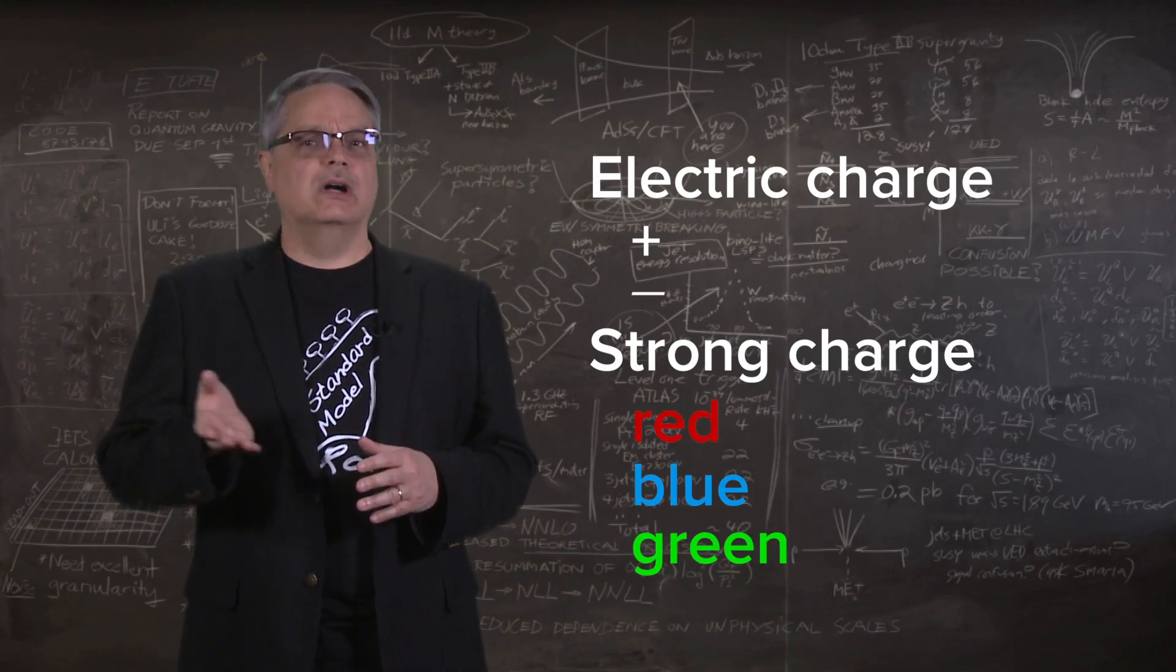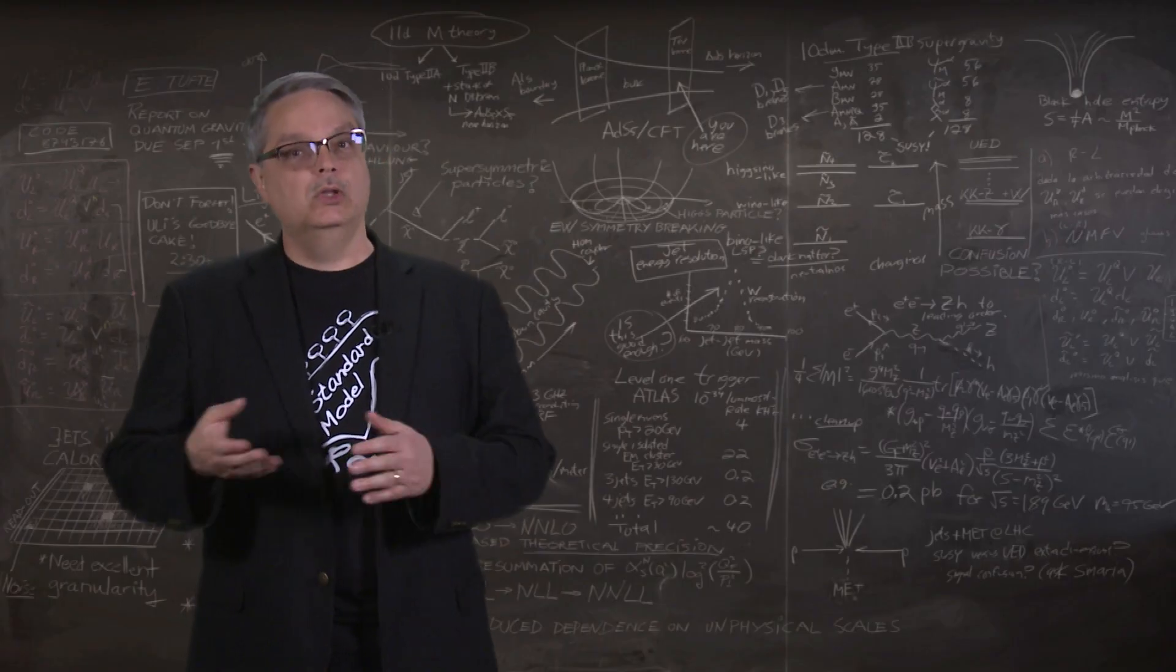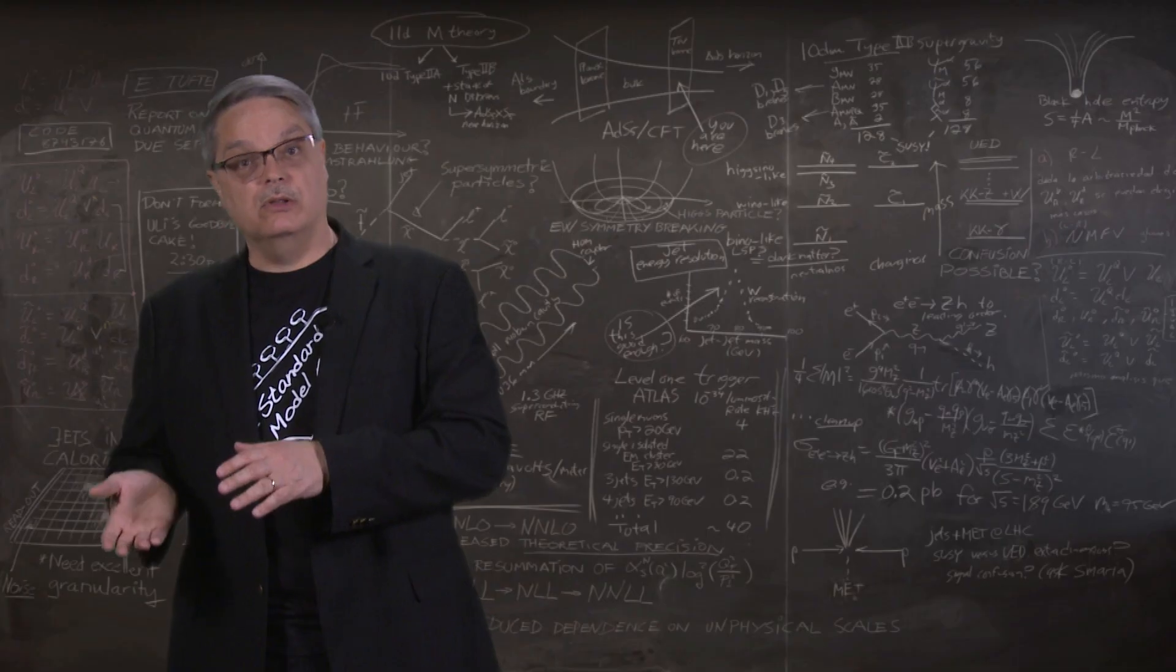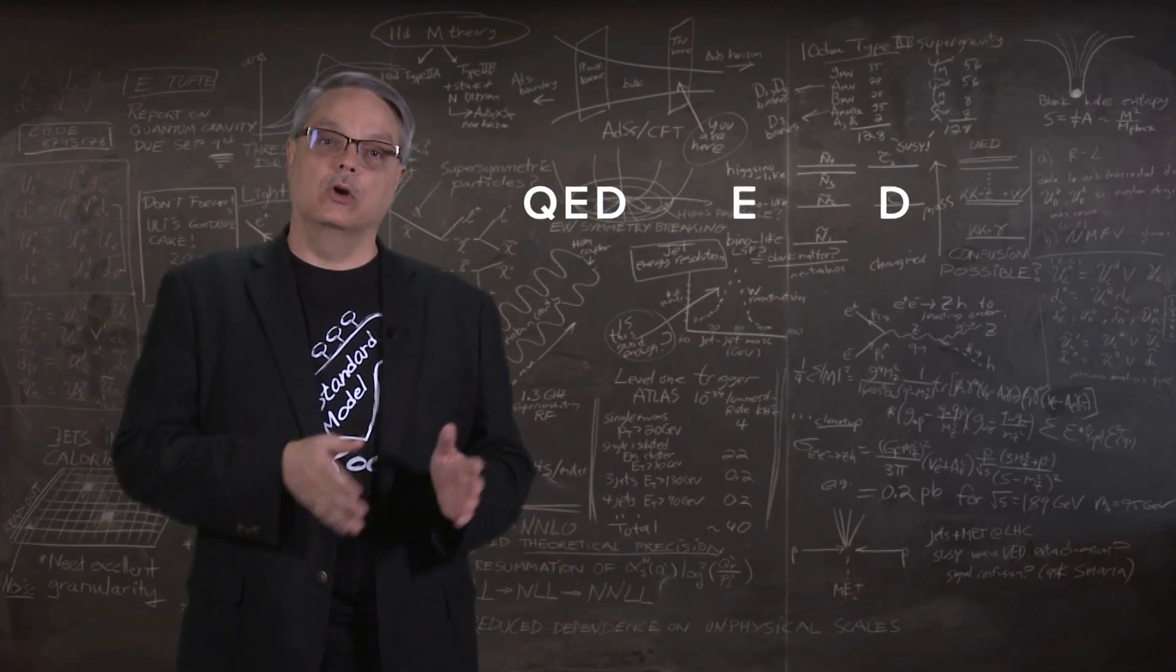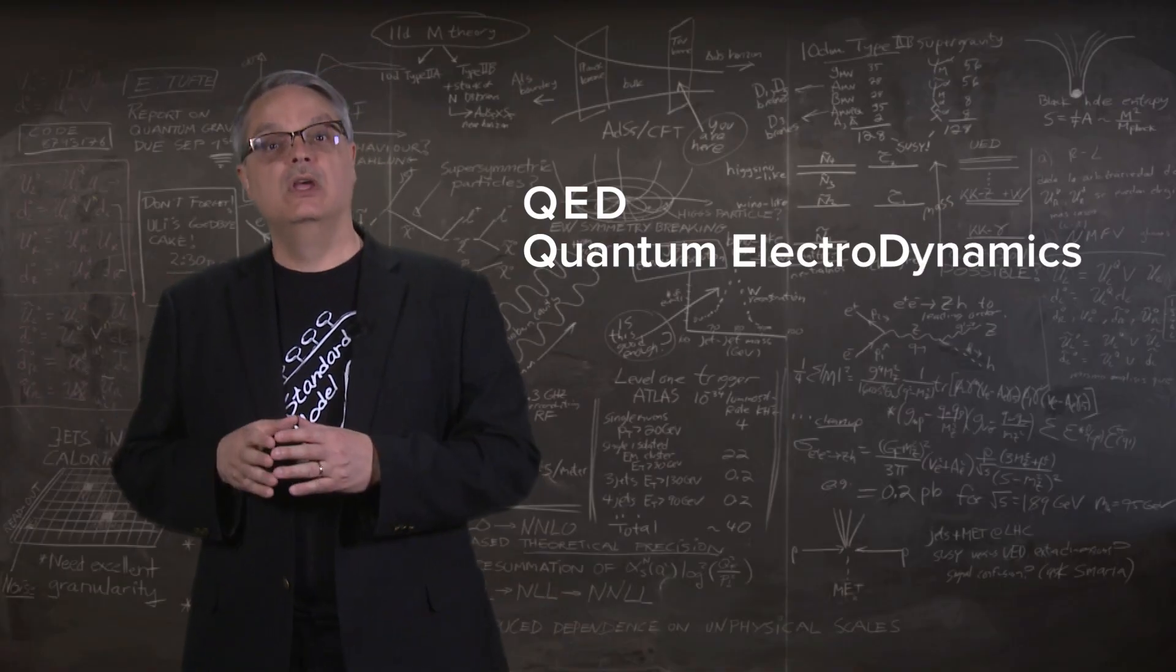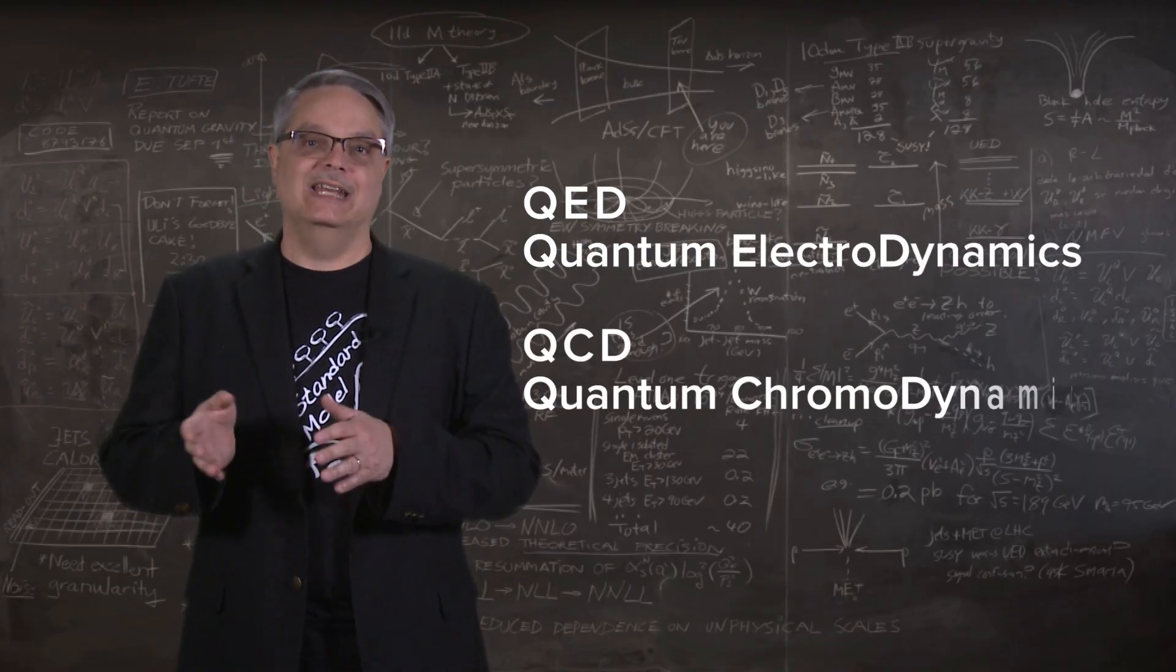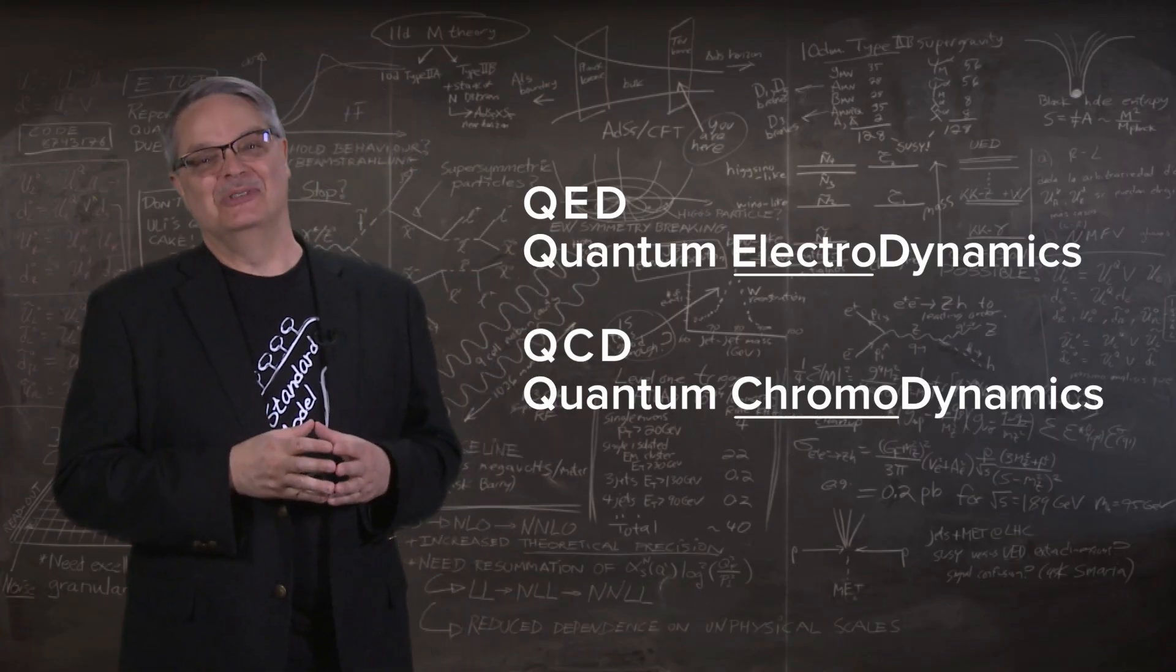The particles that the colored quarks exchange are not photons, but rather particles called gluons. The photon is the particle of the electromagnetic force, and the gluon is the particle of the strong force. And in analogy with QED, or quantum electrodynamics, we call this theory QCD for quantum chromodynamics. Get it? Chromo color? Alright, sometimes I'm a little embarrassed by my tribe.